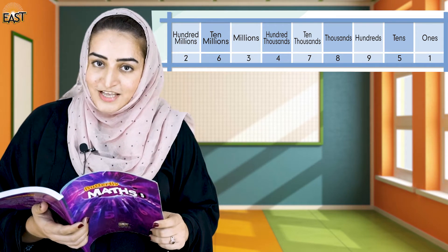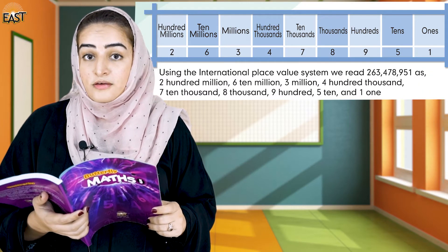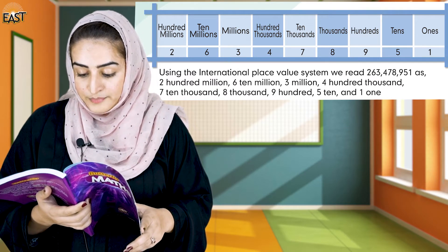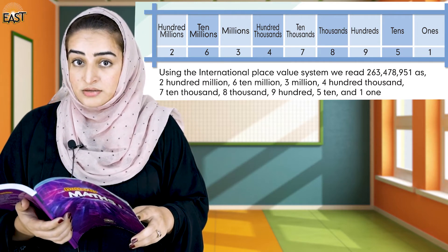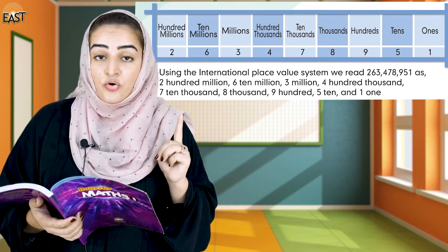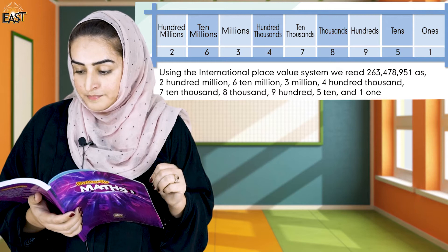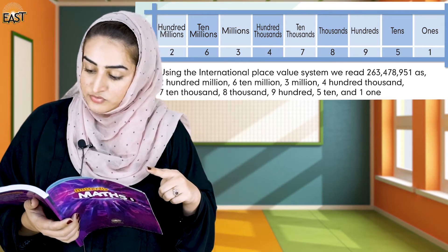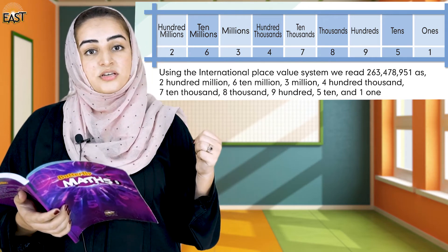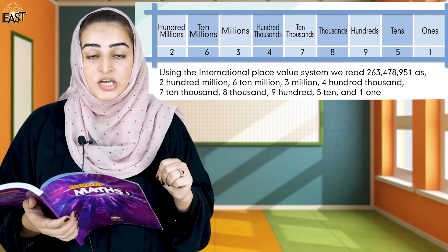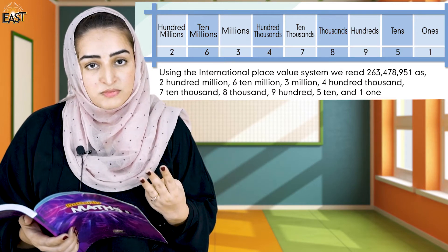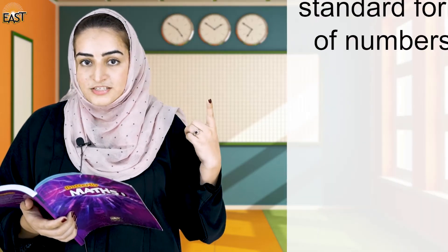Now we will read the number to know its word form. We have the family of millions: 2, 6, 3 — so we read it as two hundred sixty-three million. Then the thousands family: 4, 7, 8 — four hundred seventy-eight thousand. Then the ones family: 9, 5, 1 — nine hundred fifty-one. This is the word form of the number.